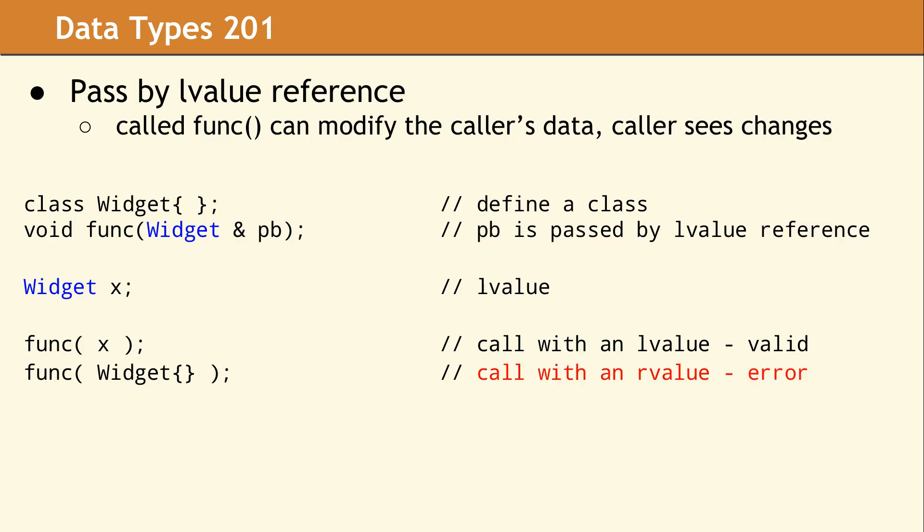In this code, we've added an ampersand. So the widget ampersand pb is passed by L value reference. In the first call to func, we're passing x, which is an L value category. In the second call to func, this is a widget constructor, which would be a temporary, an R value category. And this is not valid, because the caller would not be able to see the changes made to the temporary widget.